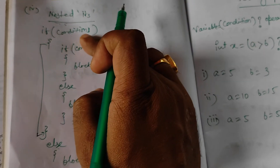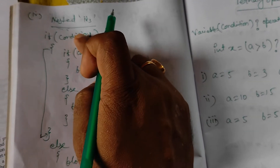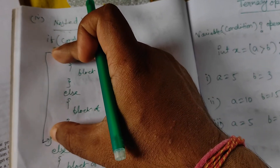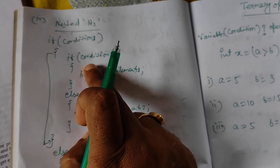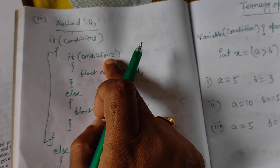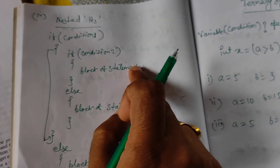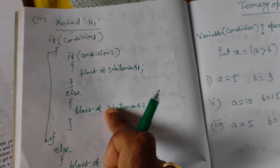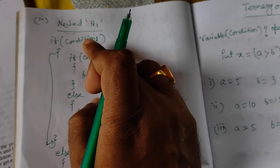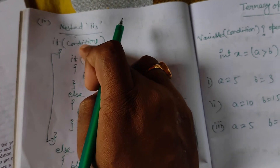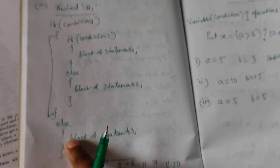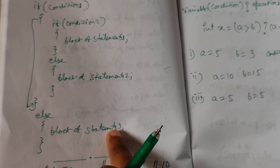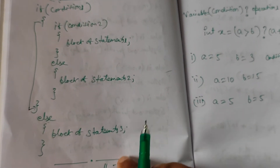To repeat: if condition 1 is true, it enters the if block and checks condition 2. If condition 2 is also true, block of statement 1 executes. If condition 2 is false, block of statement 2 executes. But if condition 1 itself is false, it goes to the else part and block of statement 3 executes, then exits.